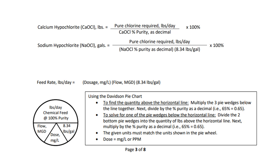We are going to be using the sodium hypochlorite gallons formula, solving for gallons: pure chlorine required (pounds per day) divided by the percent purity as a decimal times 8.34 pounds per gallon. We're also going to be using the pounds per day formula because you need pure chlorine required in pounds per day — that's dosage (mg/L) times flow (million gallons per day, interchangeable with volume) times 8.34 pounds per gallon. There's a link to a video on solving for pounds if you want practice.